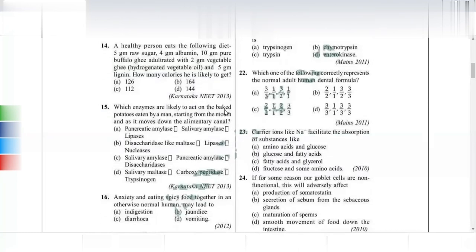Which enzymes act on baked potatoes as food moves from the mouth down the alimentary canal? Baked potatoes contain starch. Starch digestion begins in the mouth with salivary amylase. Starch does not digest in the stomach. Then pancreatic amylase acts in the small intestine, followed by maltase in the succus entericus acting on disaccharides. The answer is option C.